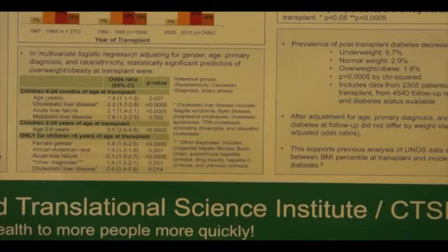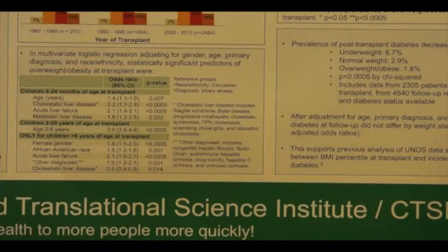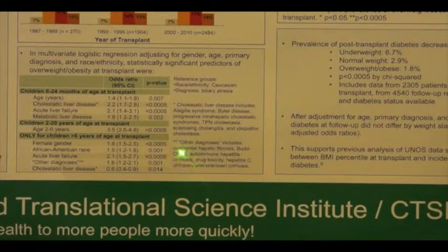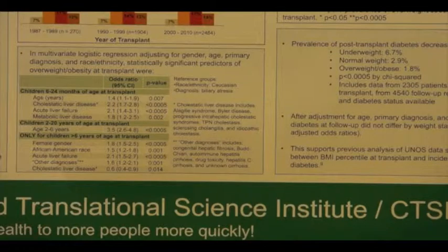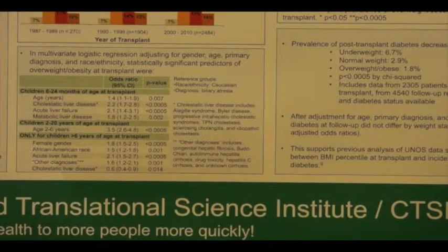For the 2 to 6-year-olds, race, ethnicity, and diagnosis were not associated with being overweight or obese at transplant. For children more than 6 years of age at transplant, being female, African-American, or transplanted for acute liver failure was associated with increased risk of being overweight or obese before transplant.